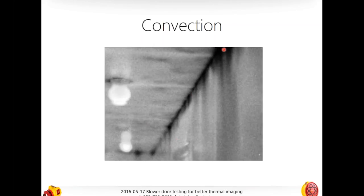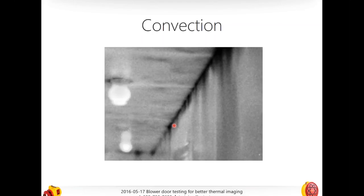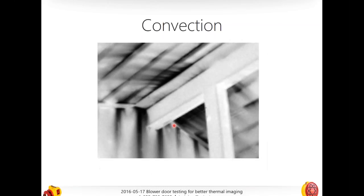Another great example — the difference between this picture, which has windows making it an outside wall, and this one, which is an interior hallway, but still has obvious leakage with the blower door running. The answer: it is an open top plate. We're looking at open top plates — one exterior, one interior — and it really doesn't make that big a difference when talking about convection. In fact it might even be worse on interior walls.